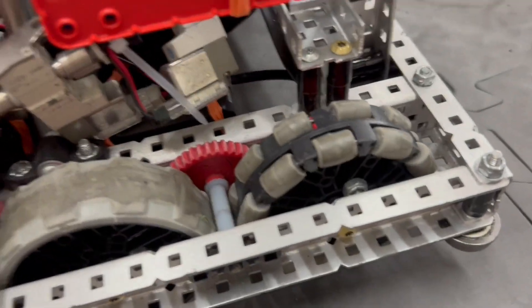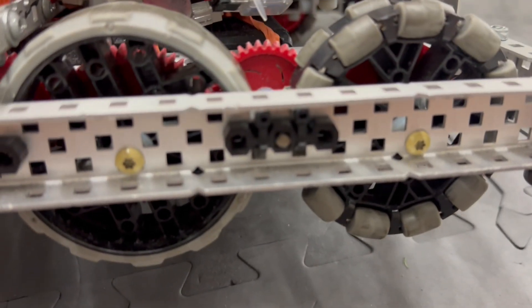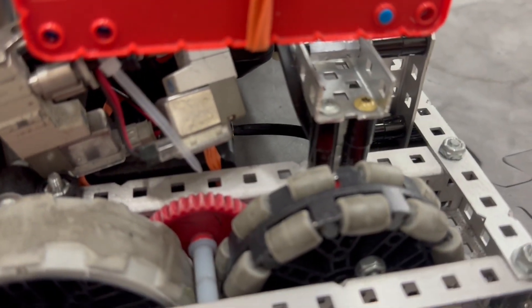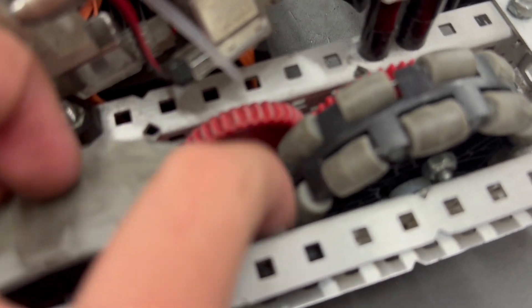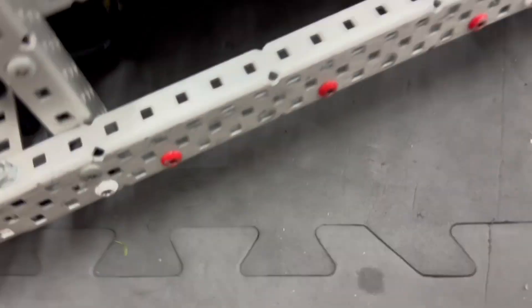And of course, the basic drive stuff. You can see we ran zip tie bearings as well as screw joints to reduce robot weight. A big shout out to the McMaster spacers for carrying the drivetrain.